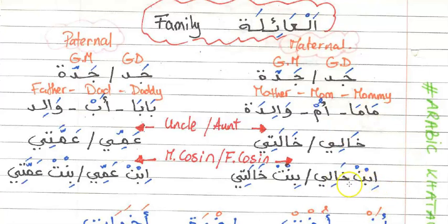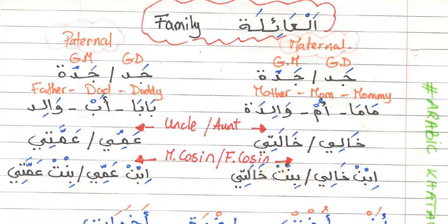Ibn khali is the son of my maternal uncle, and bint khalati is the daughter of my maternal aunt — and vice versa. Ibn ammi is the son of my paternal uncle and bint ammati the daughter of my paternal aunt. Ibn means son and bint means daughter. All eight combinations of ibn/bint with khali/khalati/ammi/ammati are simply 'cousin' in English, divided by gender and maternal vs. paternal side — four masculine and four feminine.